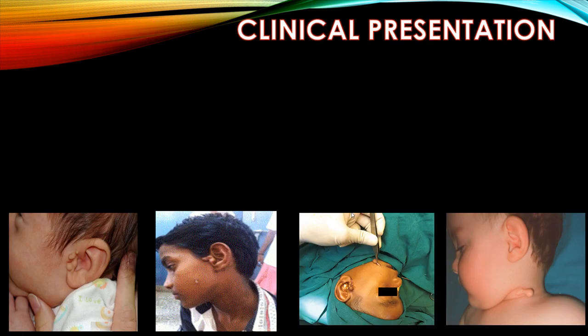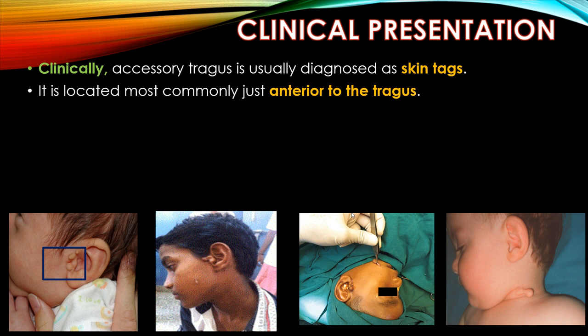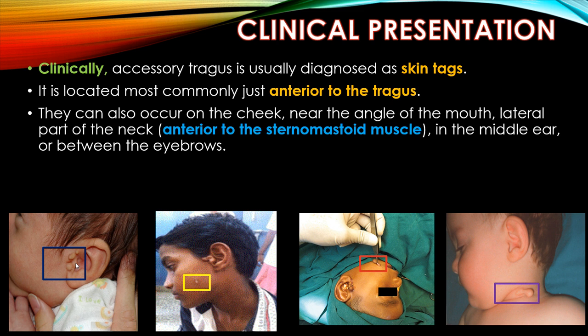Clinically, accessory tragus is usually diagnosed as skin tags. It is located most commonly just anterior to the tragus. Here you can see the normal tragus. They can also occur on the cheek, near the angle of the mouth, lateral part of the neck, anterior to the sternocleidomastoid, in the middle ear, or between the eyebrows.